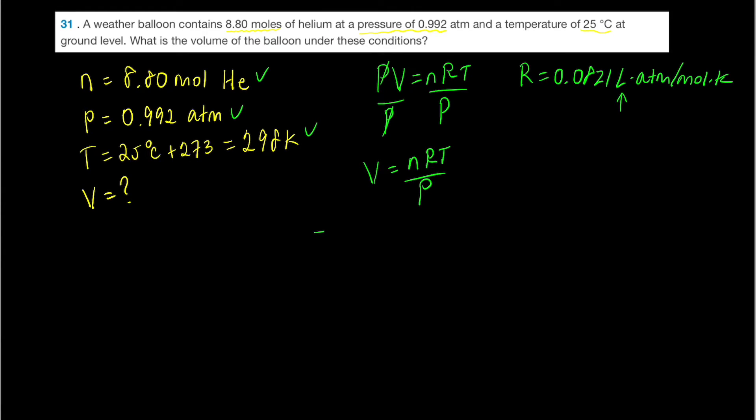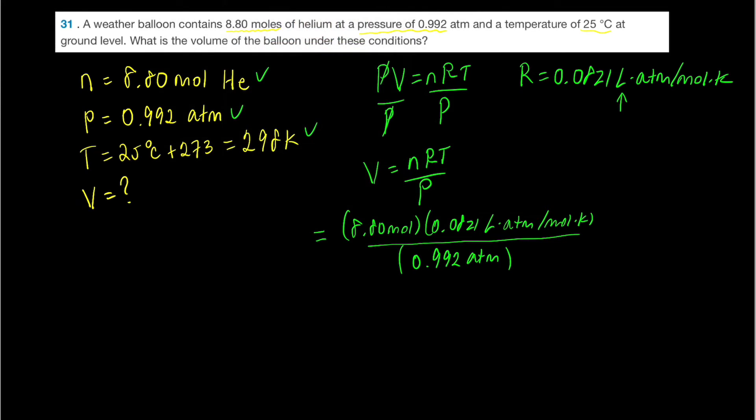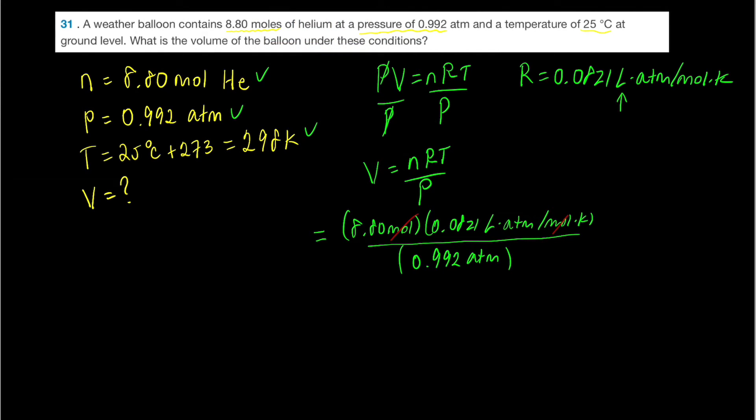So the moles is going to be 8.80. R is 0.0821 liters times atmospheres divided by mole divided by Kelvin, all divided by pressure in units of atmospheres. And for the sake of satisfaction, let's check our units here. And oops, we don't have Kelvin canceling. And this is another example of me simulating a mistake here. I forgot to plug in the temperature. So let's plug in 298 Kelvin.